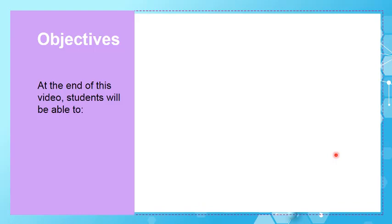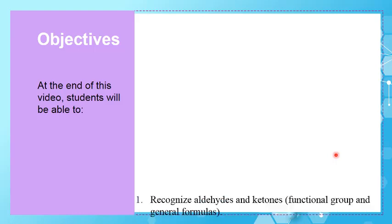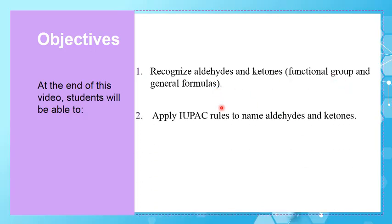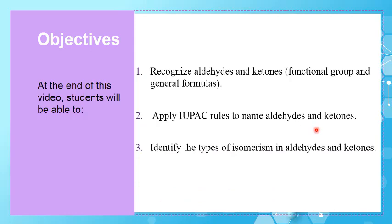At the end of this video, we have to cover three objectives. The first one is to recognize aldehydes and ketones regarding their functional group and their general formulas. The second one is to apply the IUPAC rules to name aldehydes and ketones. The third one is to identify the types of isomerism in aldehydes and ketones.